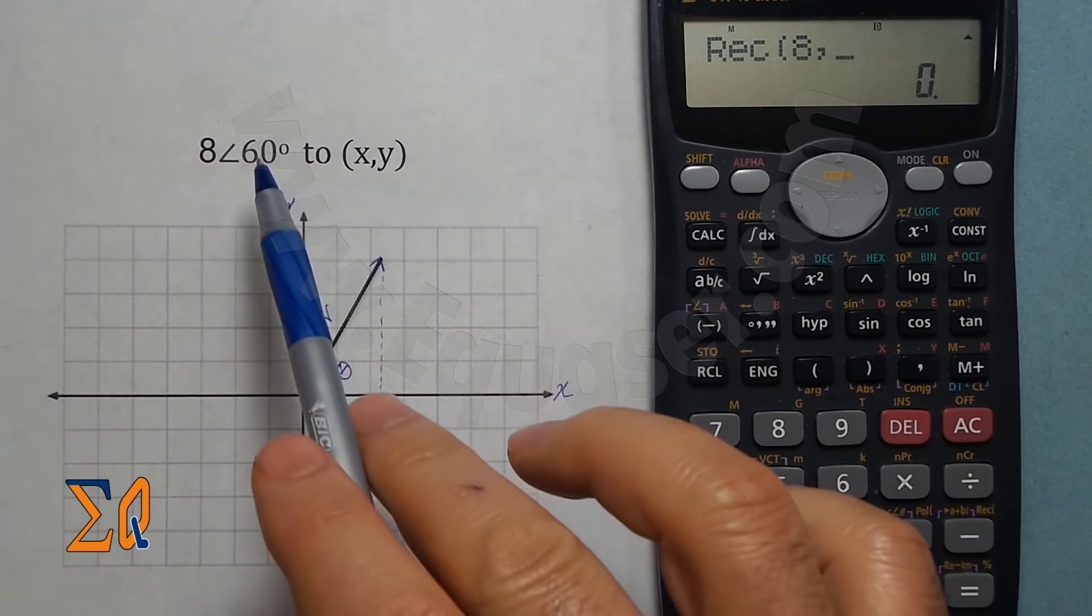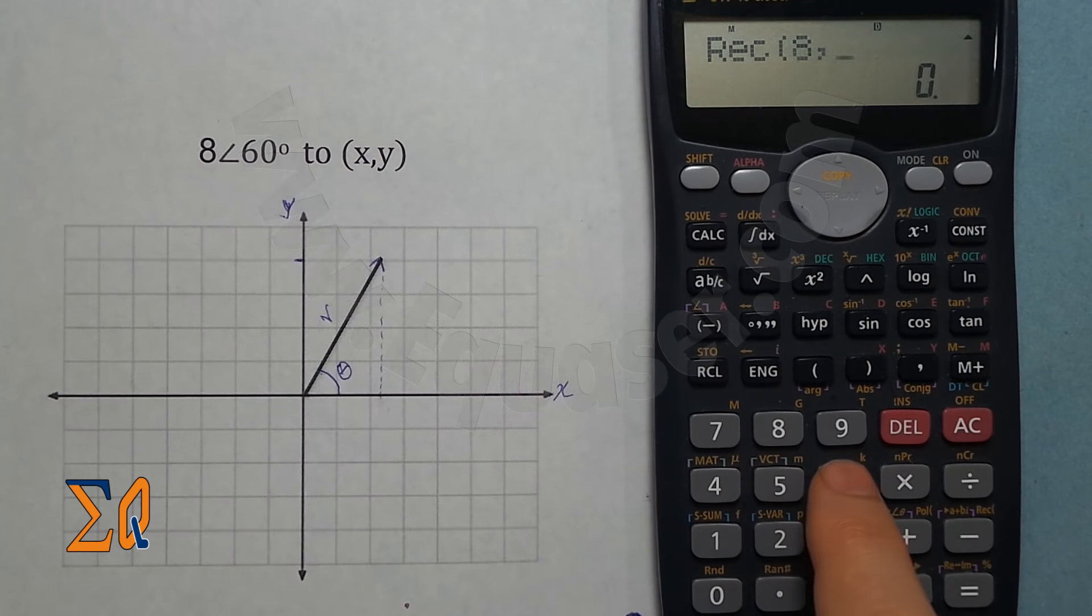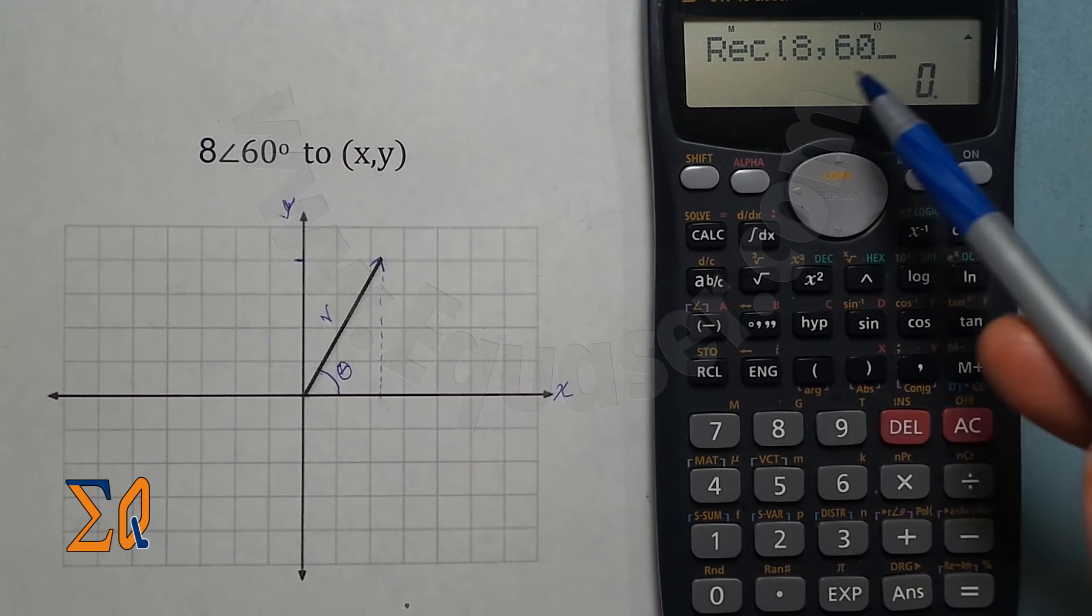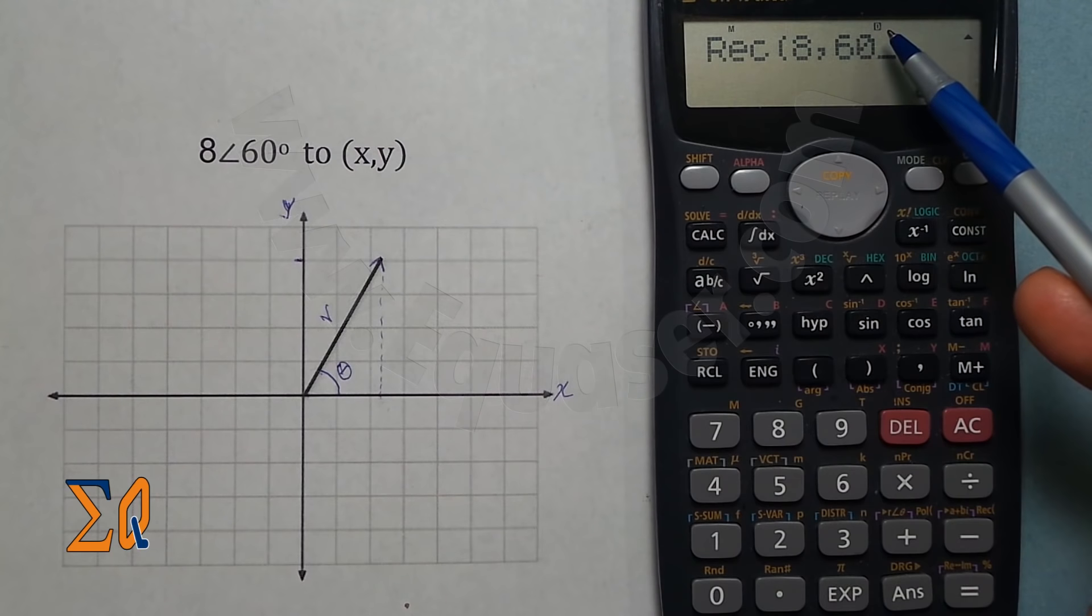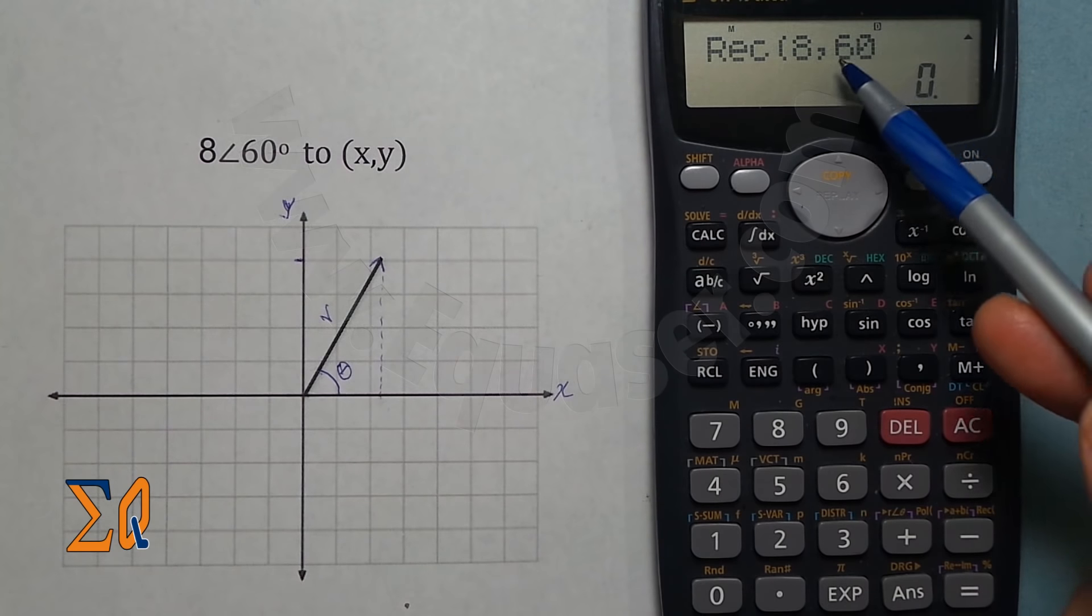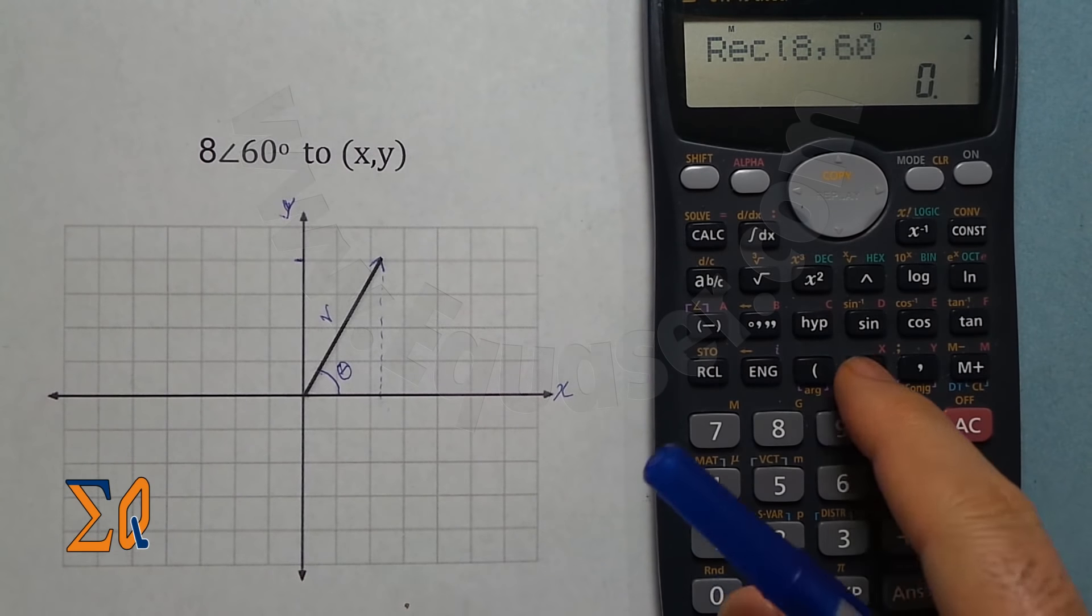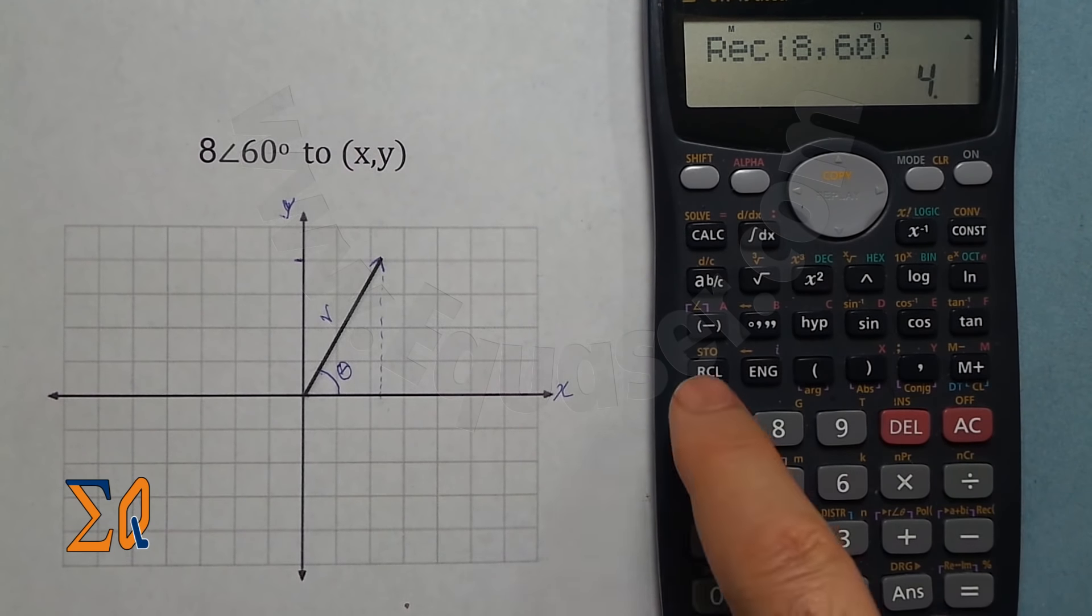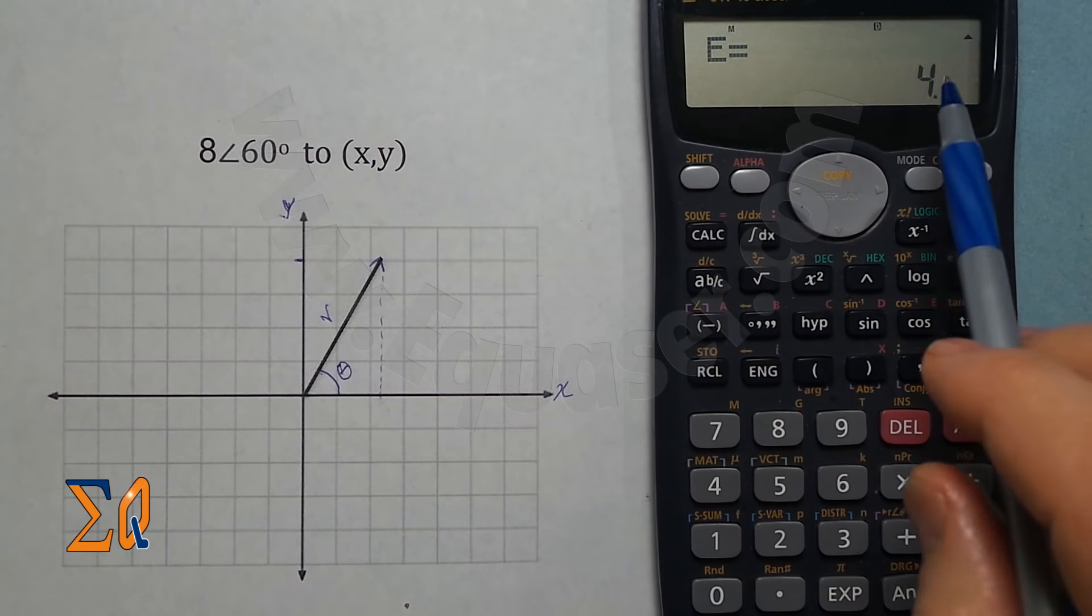Remember your calculator must be in degree mode in order to get the degree. If the calculator is in R mode it assumes that this value is in radians. Now I enter that. Now recall E, that is my X.